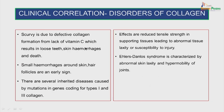Disorders of collagen: Scurvy is due to defective collagen formation from lack of vitamin C, which results in loose teeth, skin hemorrhages and death. Small hemorrhages around the skin hair follicles are an early sign. There are several inherited diseases caused by mutations in genes coding for Type I and III collagen. The effects are reduced tensile strength in supporting tissues, leading to abnormal tissue laxity or susceptibility to injury. Ehlers-Danlos syndrome is characterized by abnormal skin laxity and hypermobility of joints.